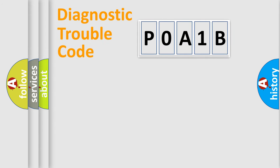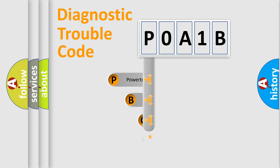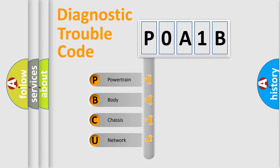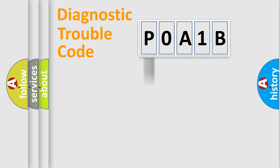First, let's look at the history of diagnostic fault code composition according to the OBD2 protocol, which is unified for all automakers since 2000. We divide the electric system of an automobile into four basic units: Powertrain, Body, Chassis, and Network. This distribution is defined in the first character of the code.